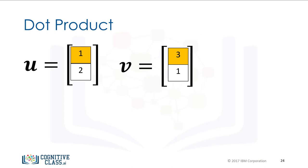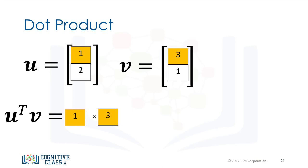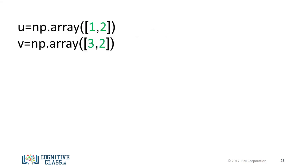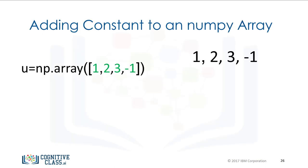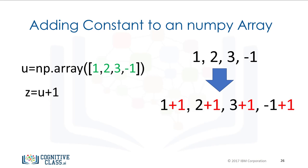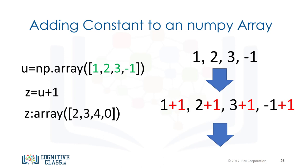The dot product is another widely used operation in data science. Consider vectors u and v. The dot product is a single number that represents how similar two vectors are. We multiply the first components of u and v, then multiply the second components and add the results together. We can perform the dot product using the NumPy function dot and assign the result to a variable. If we add a scalar value to a NumPy array, NumPy will add that value to each element. This property is known as broadcasting.